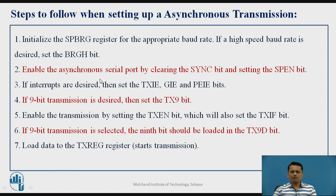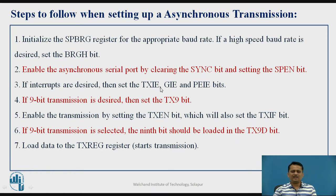If you want an interrupt due to the transmission, you can enable that interrupt. The TXIE flag has to be set, the global interrupt enable (GIE) has to be enabled globally, and the peripheral interrupt enable bit (PEIE) also has to be enabled. If all three bits are enabled, the serial transmission will also result in an interrupt.